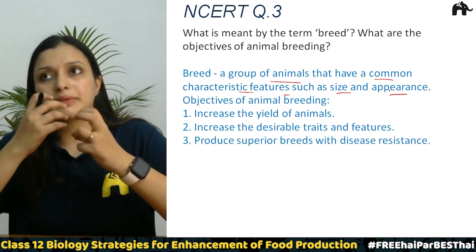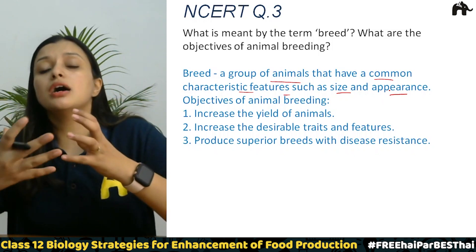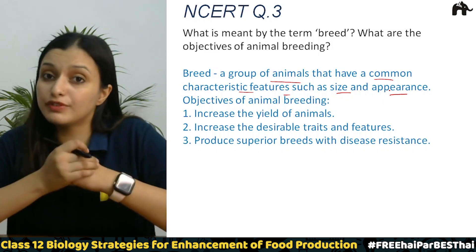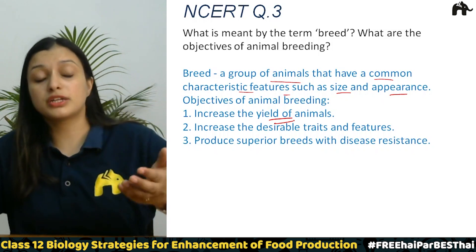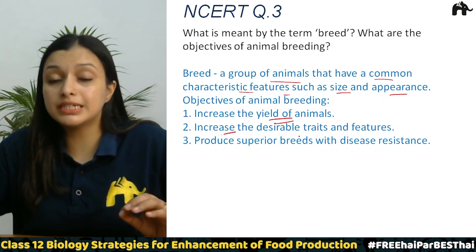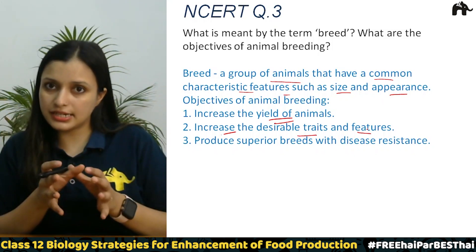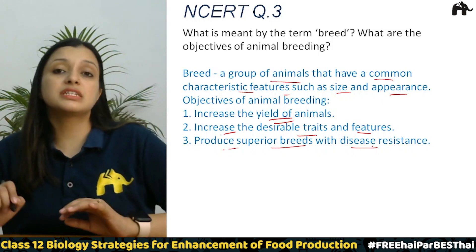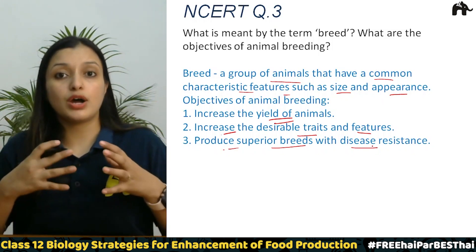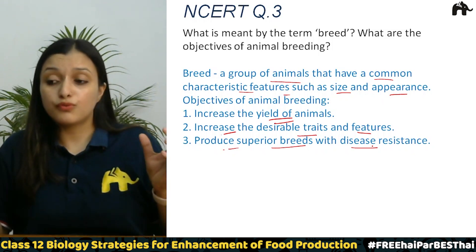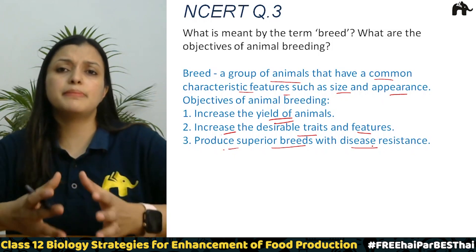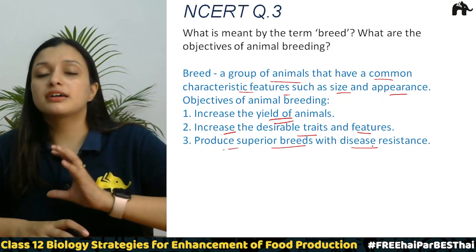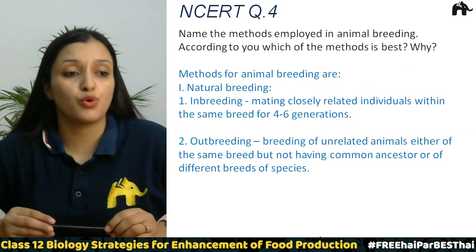Now, what is animal breeding? Animal breeding is the process of mating animals so that we can get good progeny of better quality. The objectives of animal breeding are: first, our yield should be good; second, there should be an increase in desirable traits and features passed on to the progeny; and third, to produce superior breeds with disease resistance so that animals are healthy.